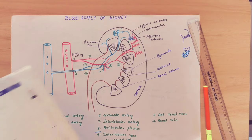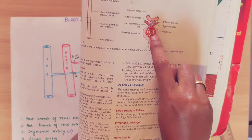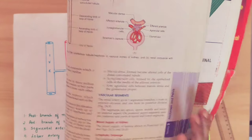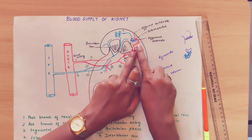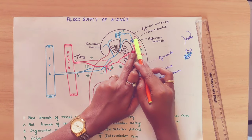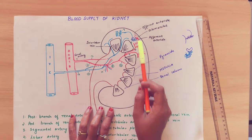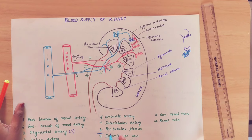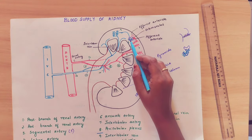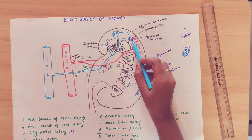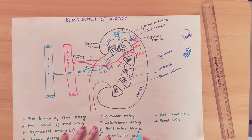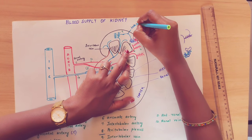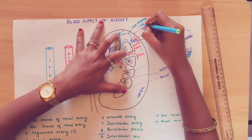So from the afferent arteriole, it forms the glomerulus inside the Bowman's capsule. From the glomerulus it goes as the efferent arteriole. The efferent arteriole then surrounds the nephron tubes — ascending and descending — forming a plexus called the peritubular plexus.